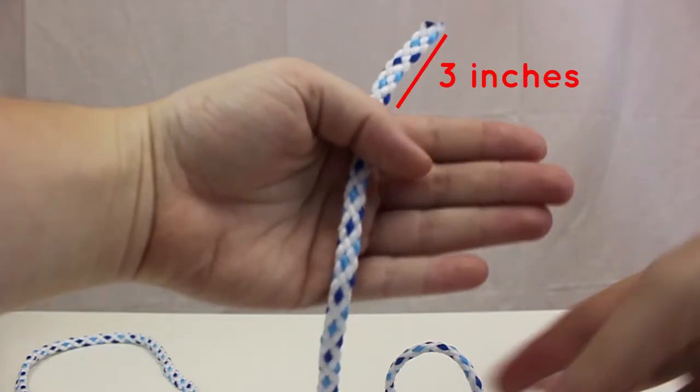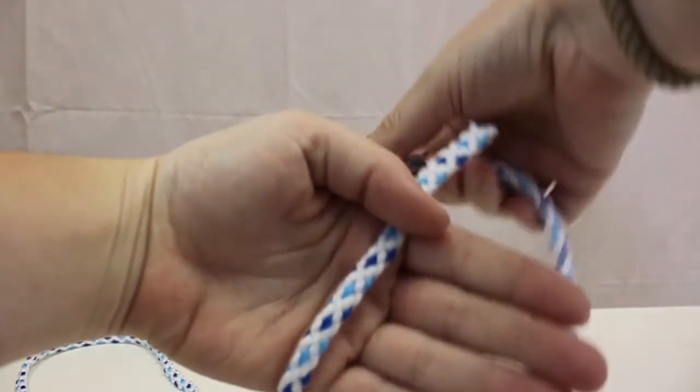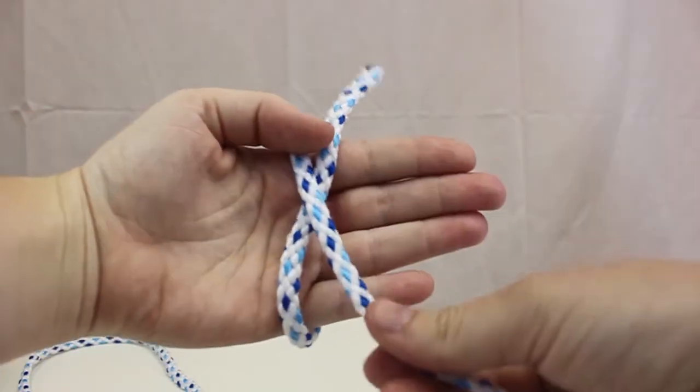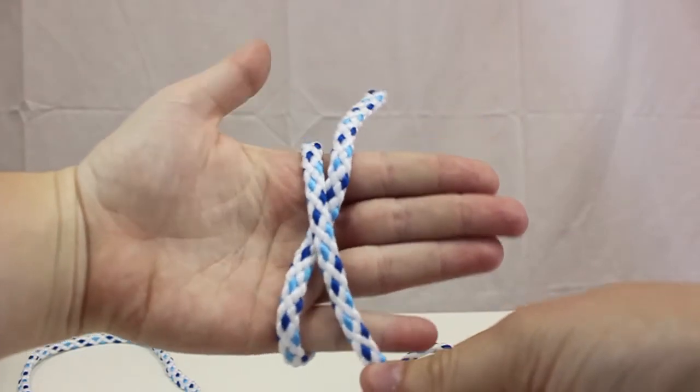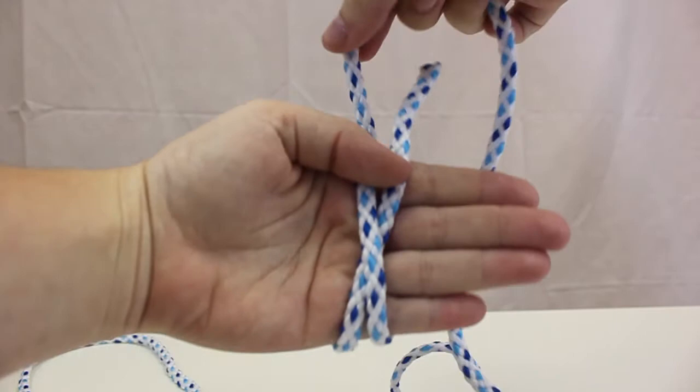Grab the cord with your hand leaving a 3 inch tail at the top. Then wrap your long piece or your working end around your hand and create an X. Now wrap that working end around again and bring it through the middle of the X and then pull to the left.